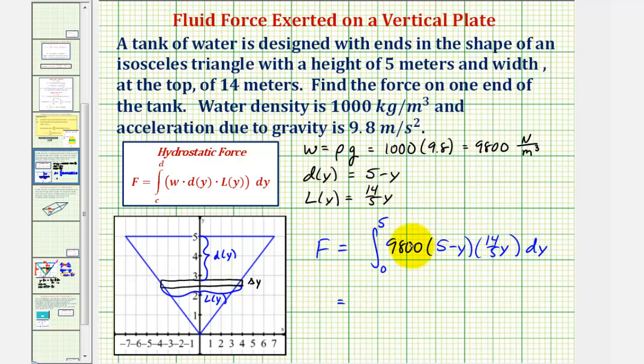So let's go ahead and factor out the 9800, as well as the 14/5. So we'd have the integral from zero to five of the quantity (5 - y) times y, integrated with respect to y. Let's go ahead and finish this on the next slide.